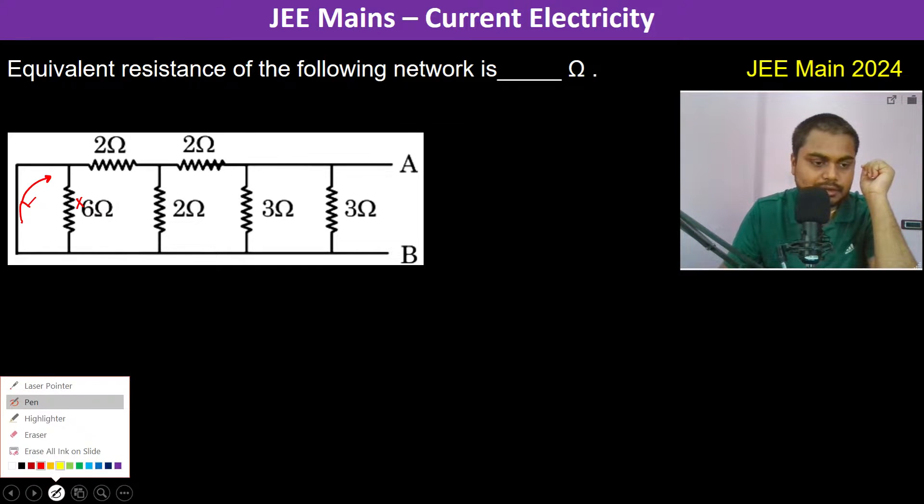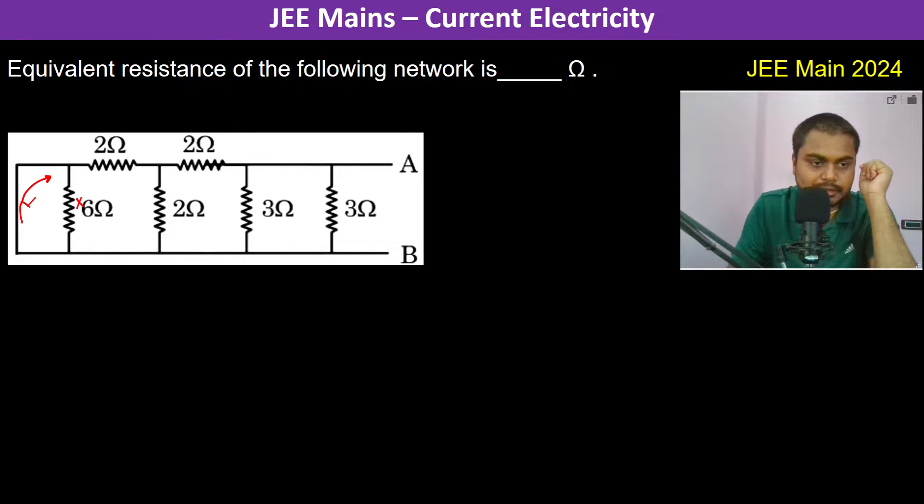Therefore, this circuit actually reduces to something like: 2 ohm, and then this 6 ohm is omitted, and then again it's 2 ohm here, again it's 2 ohm, 3 ohm, yeah maybe 3 ohm.